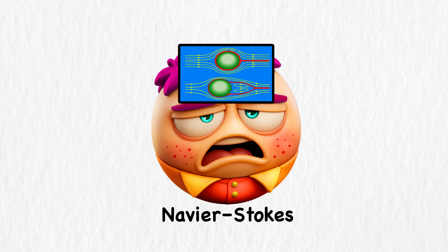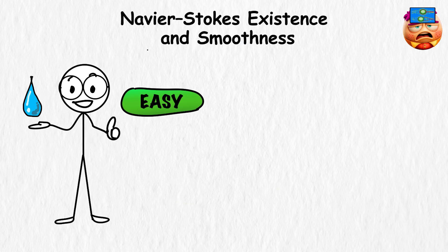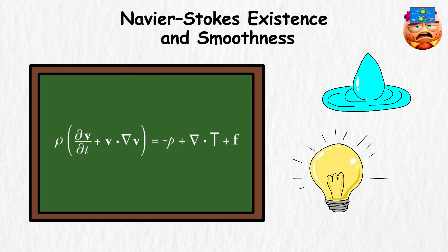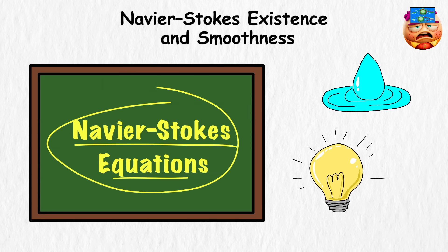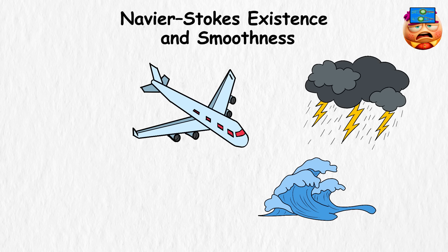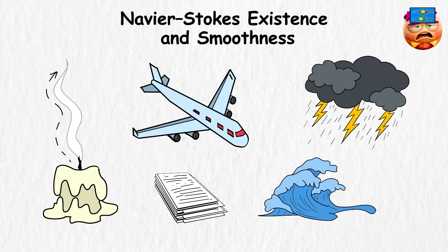Navier-Stokes existence and smoothness. Water seems easy, until you try to explain it with math. The equations for how fluids move are called the Navier-Stokes equations. They're behind everything, from weather forecasts to ocean waves, airplane design, and even how smoke curls off a candle.